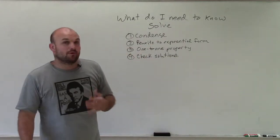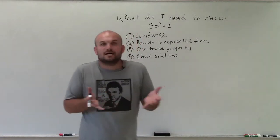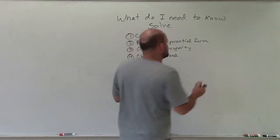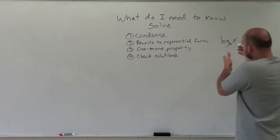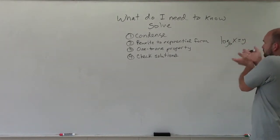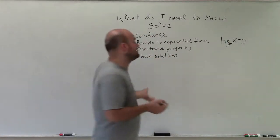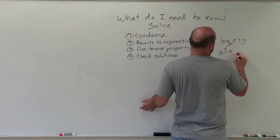The next thing that's going to become very important is rewriting it in exponential form. I think this is one of the easiest ways to solve logarithmic equations. If you just have log base b of x equals y, a lot of times to solve for our missing variable, all we need to do is rewrite this in exponential form, which would be b to the y equals x.